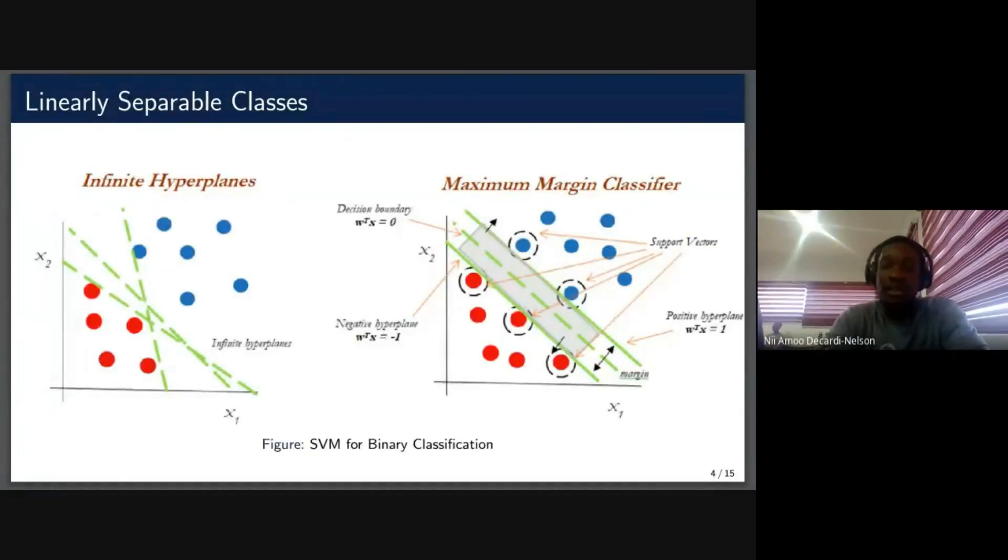Now what we did in class, we usually considered linearly separable cases. So in such a case, for instance, in this scenario, we realized that there are a number of ways you can separate this data set. We defined that as having an infinite hyperplane situation. But then what the support vector machine does is that it finds the best one that is able to maximize this margin. So it's also known as a maximum margin classifier.